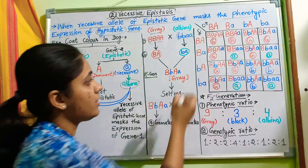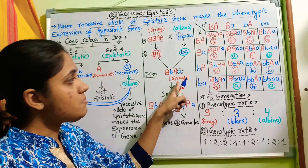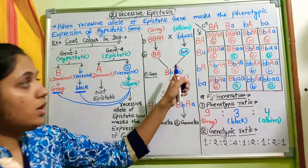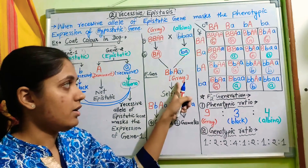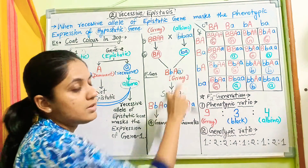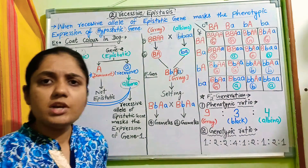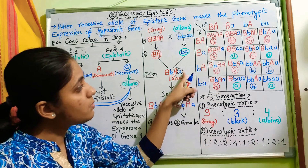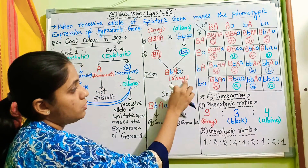In the F1 generation, the recessive allele small a of the epistatic gene is present, yet the phenotype is gray, not albino. This is because along with small a, the dominant allele capital A is also present. Since capital A is dominant over small a, it suppresses small a, so small a cannot perform epistasis. Therefore, capital B can express and the gray color is produced, not albino.